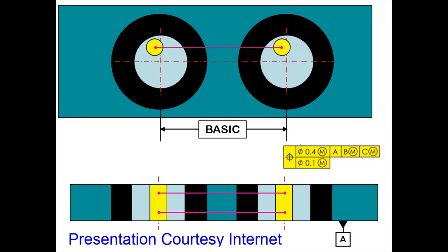Here these two yellow cylindrical tolerance zones can float within the 0.4 diameter blue cylinder tolerance zone, at the same time maintaining the relationship - that is the basic distance between the center of the yellow cylinders. If you see the axis,